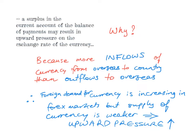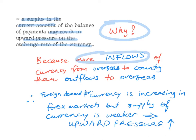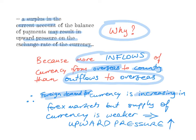The opposite is also true. The other IB learning outcome is explaining that a surplus on the current account may result in upward pressure on the exchange rate. If there is a surplus in the current account, this means that there are more inflows of foreign currency from overseas coming into the country than there are outflows of the country's currency to overseas. This means that foreign demand for the country's currency is increasing and is much stronger on the foreign exchange market, but the supply of the country's currency is weaker.